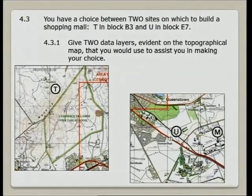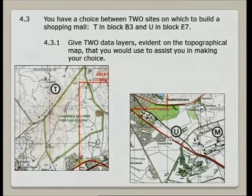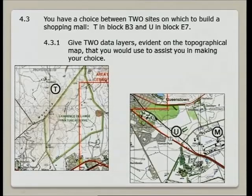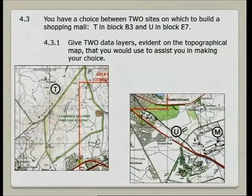Now, similar to the first question paper, you have a choice between two sites on which to build a shopping mall. At site T, we can see there are a lot of steep contours — it's against the slope. It is also behind a small mountain, in the north-east or north-western part of Queenstown, and there is a nature reserve there. So to reach it, you have to find a route — it's a little bit far away from Queenstown.